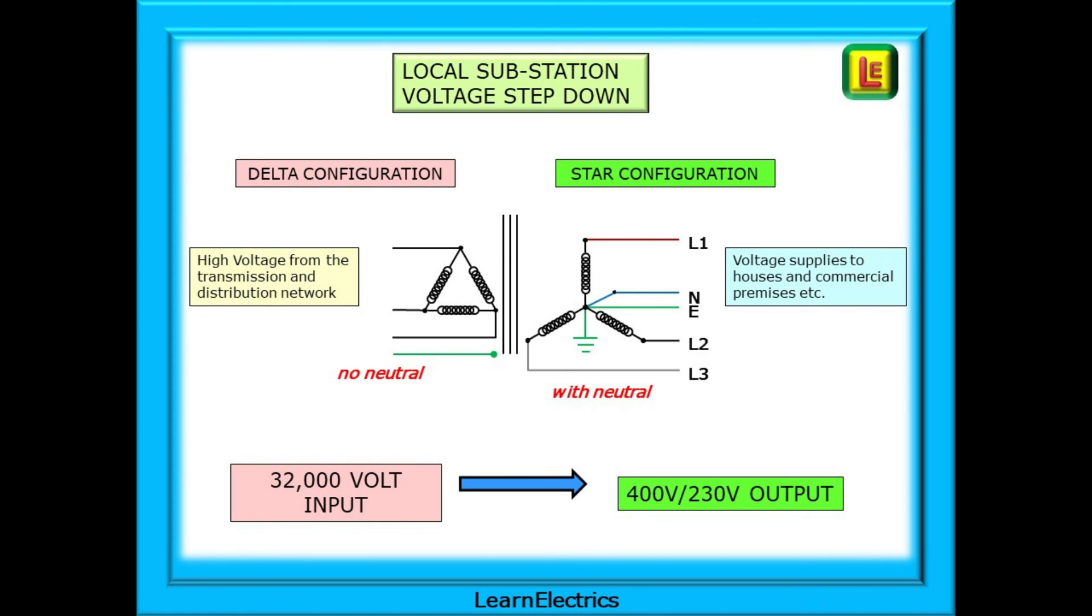The other side, the right hand side, is wired as a star configuration. All three windings are connected at a central point called the star point. The earth is also connected at the star point and we now have a neutral connection also at the star point. So we have three phases L1, L2 and L3 plus neutral plus earth. This is a step-down transformer, so our output voltages will be 400 volts three-phase and 230 volts single-phase.